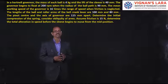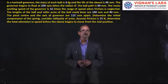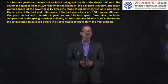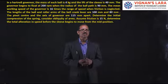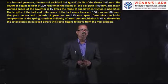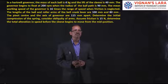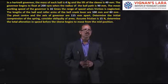In today's problem, the problem is given as follows. In a Hartnell governor, the mass of each ball is 4 kg and the lift of the sleeve is 40 mm. The governor begins to float at 200 rpm when the radius of the ball path is 90 mm. The mean working speed of the governor is 16 times the range of speed when friction is neglected.